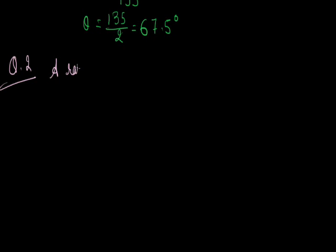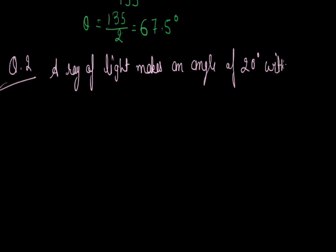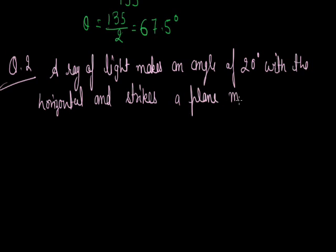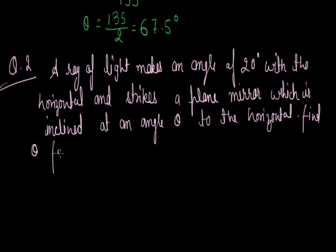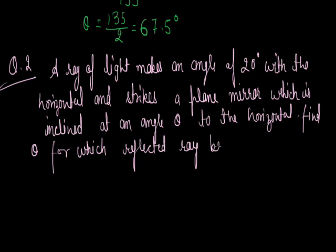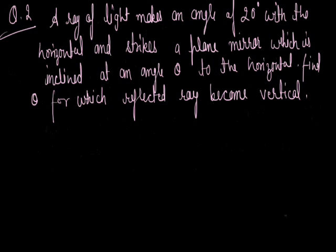Next question: a ray of light makes an angle of 20 degrees with the horizontal and strikes a plane mirror which is inclined at an angle theta to the horizontal. Find the angle theta for which the reflected ray becomes vertical. As given, the ray of light makes an angle of 20 degrees with the horizontal and strikes a plane mirror already at an angle theta to the horizontal.